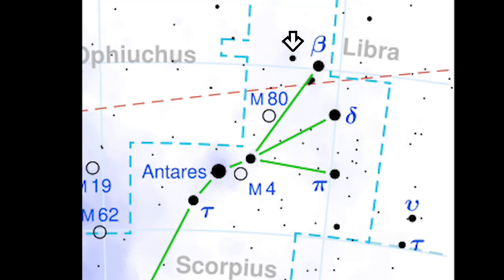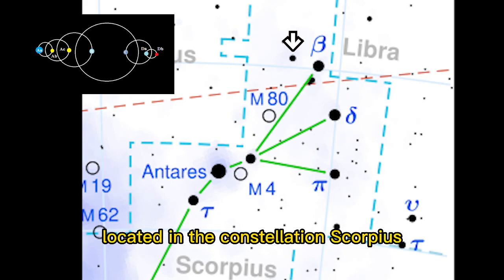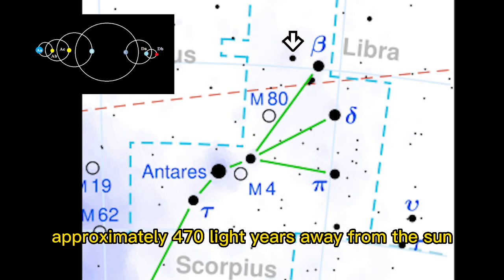Welcome to the video. Today we're talking about Nu Scorpii, a septuple star system located in the constellation Scorpius, approximately 470 light years away from the sun.